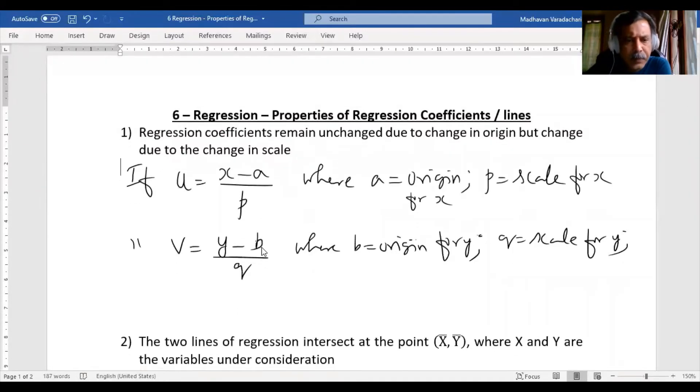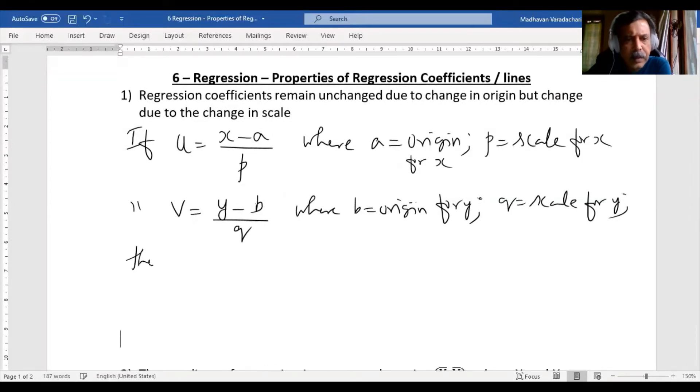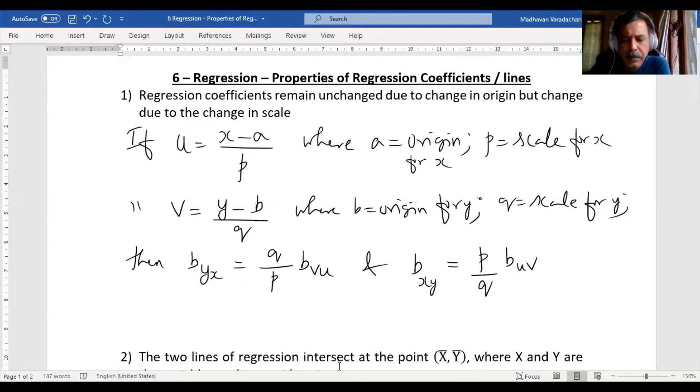Now then we have b_yx equal to q/p times b_vu, that is one. And b_xy is equal to p/q times b_uv. So we can find out the regression coefficient like that in case if you are taking the origin like this.